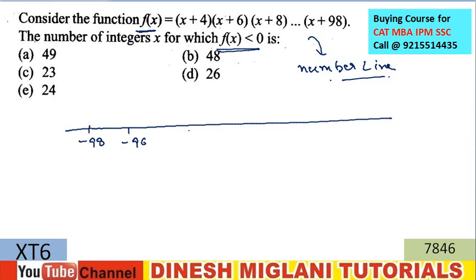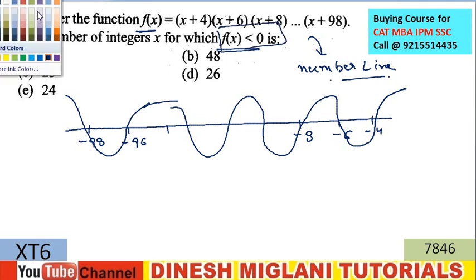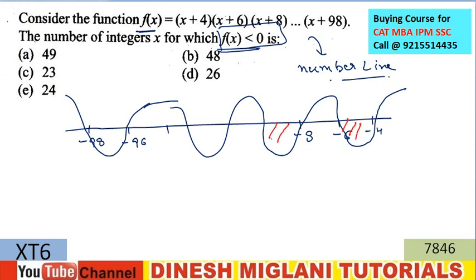On the number line we have -98, -96, ..., -8, -6, -4. Using the number line method starting from the rightmost value, the sign alternates. Since f(x) < 0, I take the negative regions. The negative intervals give integer values between consecutive roots. The first integer value is -5, then -9, then -13, and so on. I need to count how many such integer values exist.